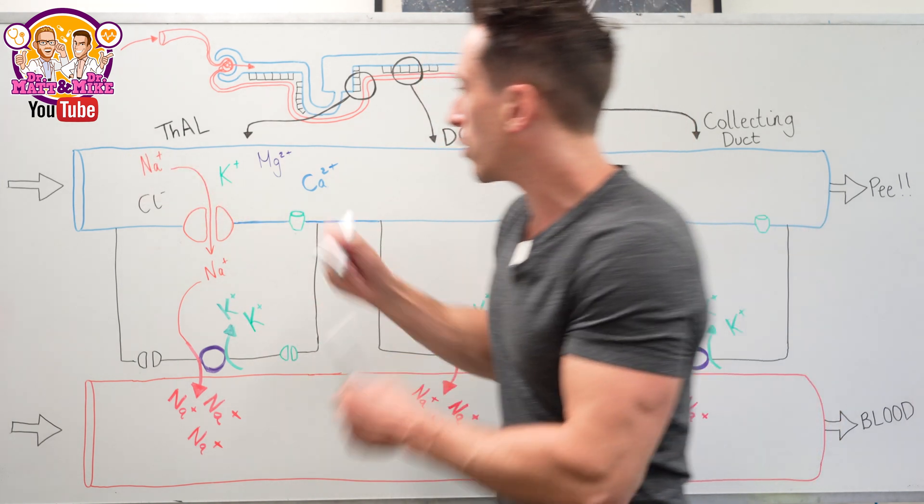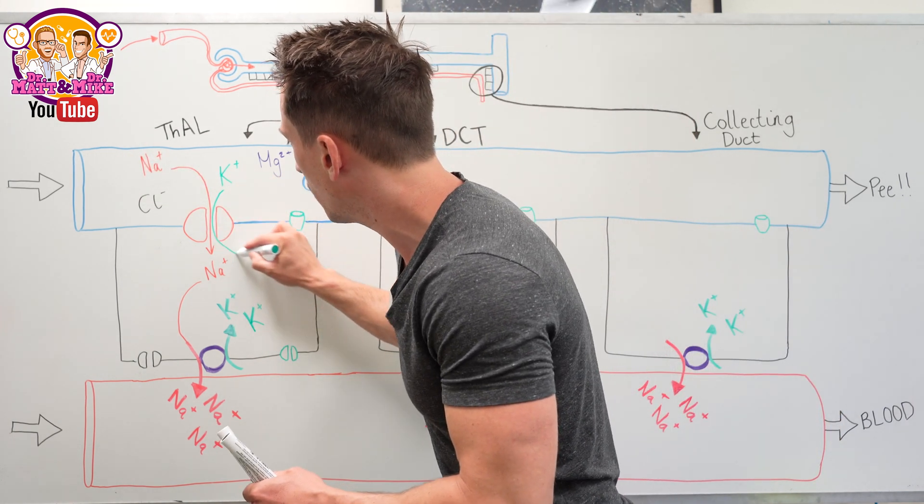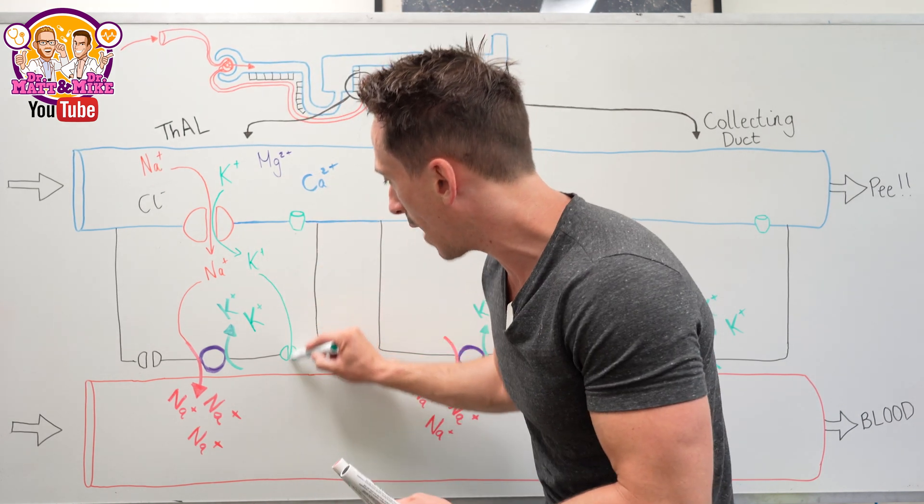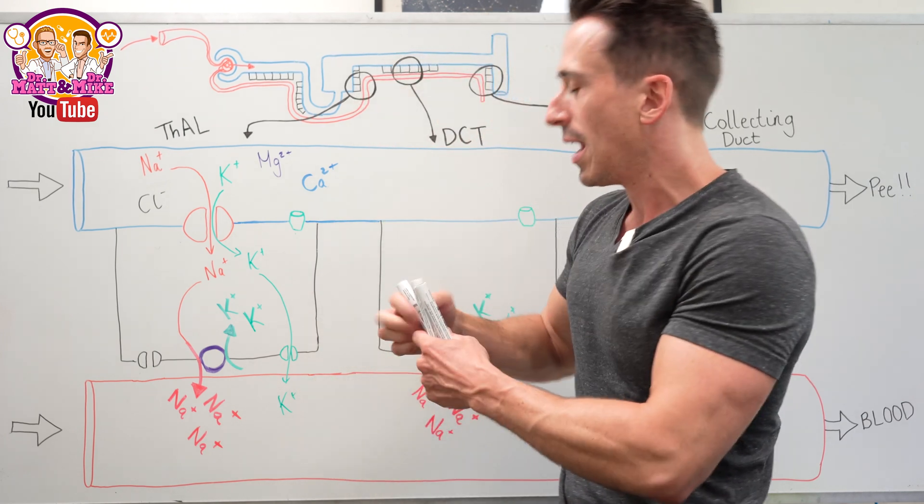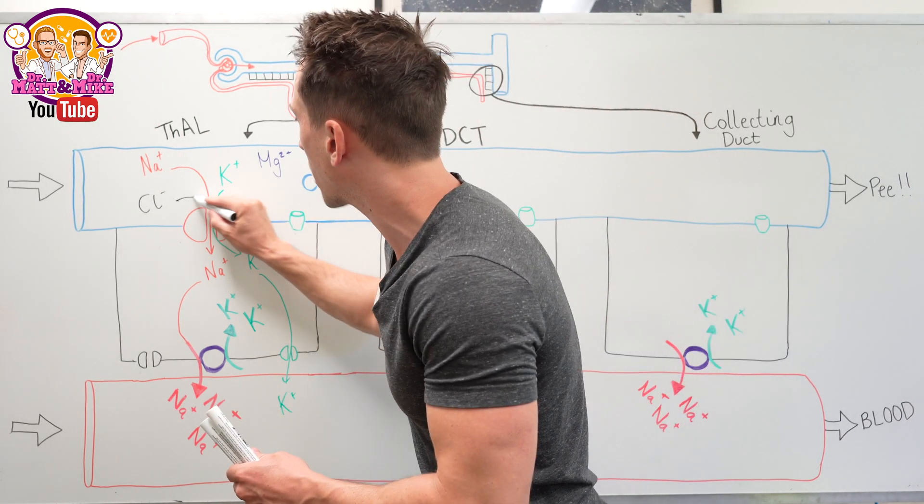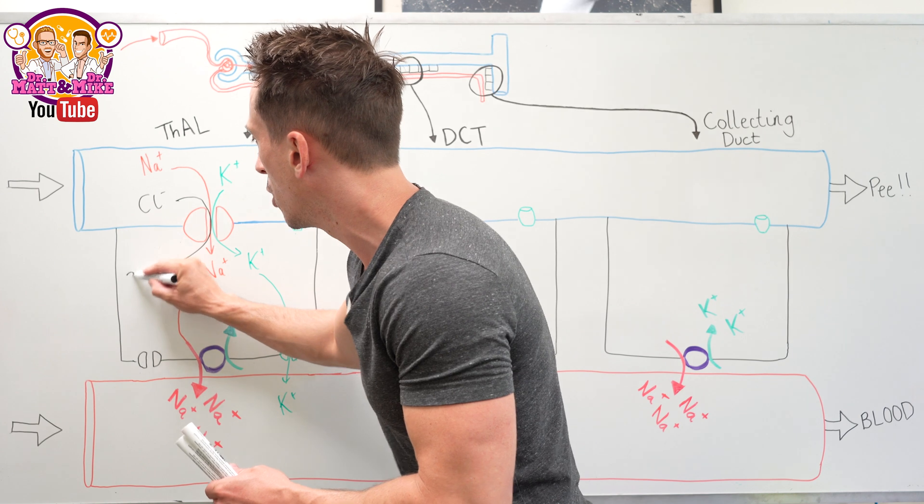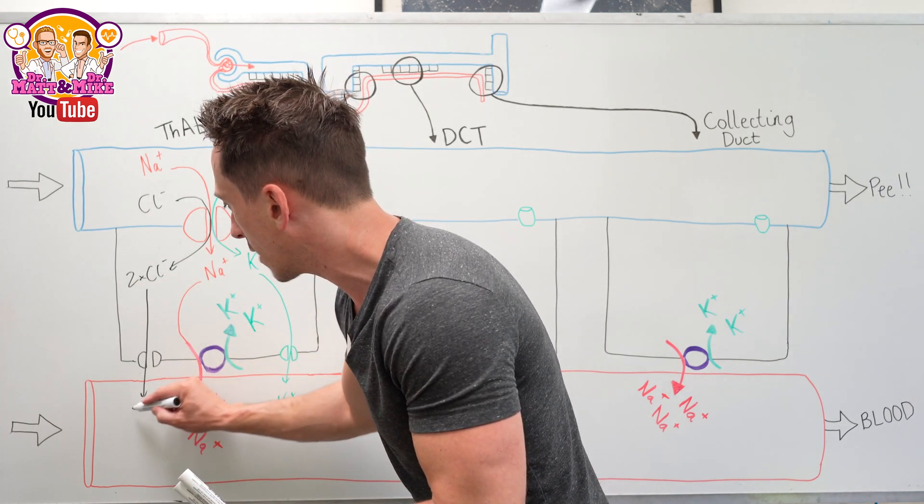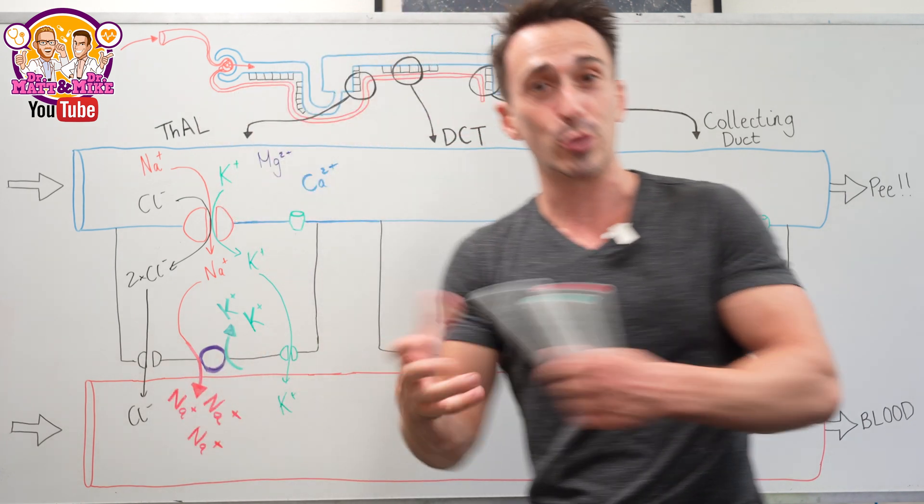Piggybacking on this process of sodium moving in is potassium also jumping in, and some of this potassium will move out into the blood as well, getting reabsorbed. Also, chloride piggybacks on this process. In fact, two chloride ions jump in and also diffuse out into the bloodstream, being reabsorbed.